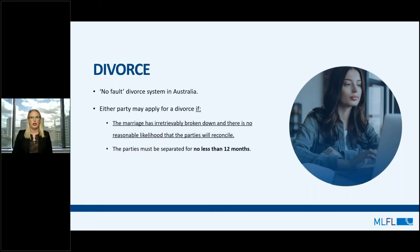Moving on from separation, we have divorce and the divorce process. From the outset, I want to point out that the Family Law Act establishes a no-fault divorce system. This means that it doesn't matter who cheated on who or whatever happened to lead to the separation. Either party may apply for a divorce if the marriage has irretrievably broken down and there's no reasonable likelihood that the parties will reconcile. To obtain a divorce, the parties must satisfy the court that they've been separated for no less than 12 months.